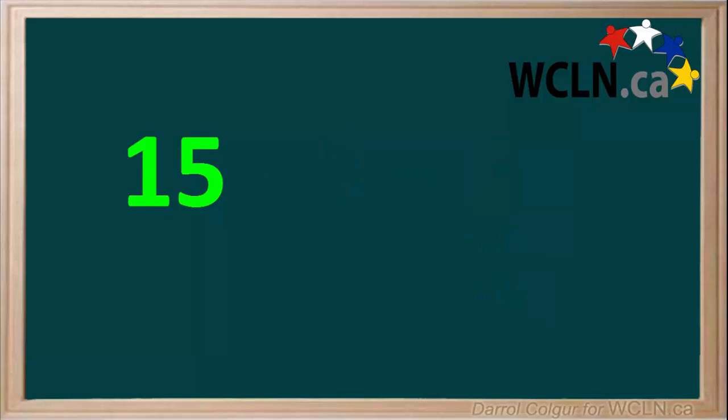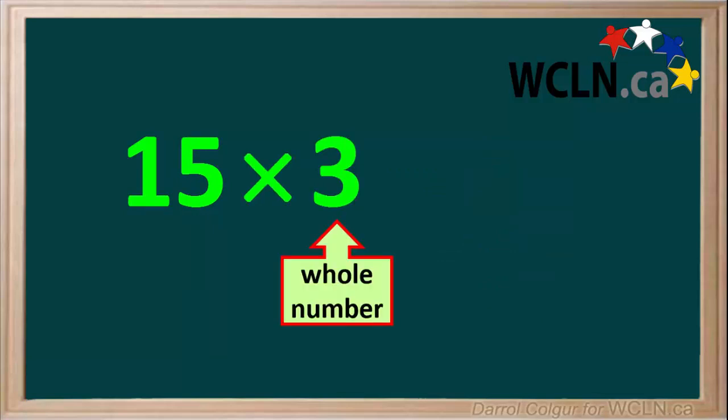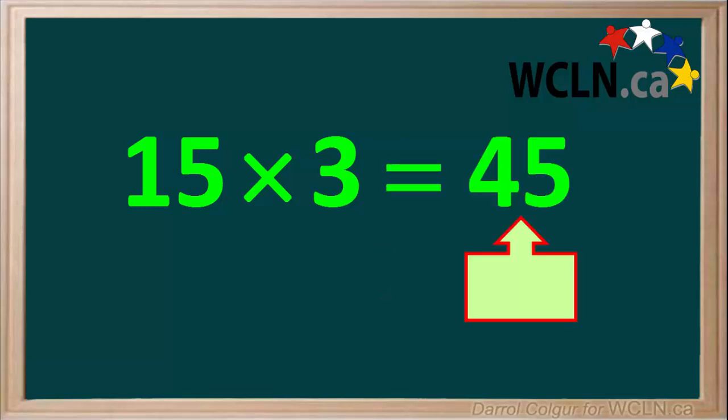Similarly, if we have the number 15 and we multiply it by the whole number 3, we get the answer 45, which is larger than our original number, 15.